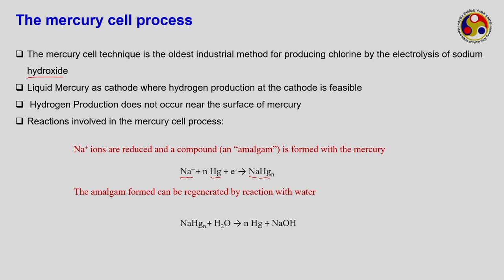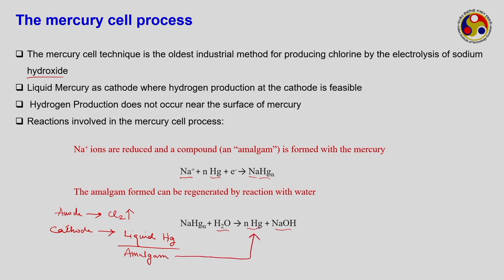The sodium amalgam (NaHg) is regenerated by reaction with water: NaHg reacts with H₂O to form NaOH and mercury. This means the anode liberates chlorine, while the cathode — liquid mercury — forms the amalgam. When the amalgam is decomposed with water, you get mercury and sodium hydroxide. This sodium hydroxide is very pure and not contaminated, making the mercury cell an important source of pure caustic solution.